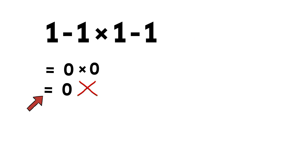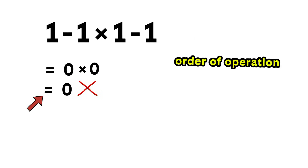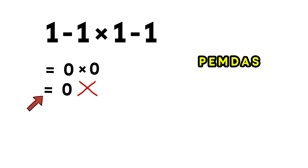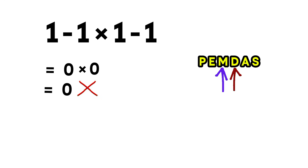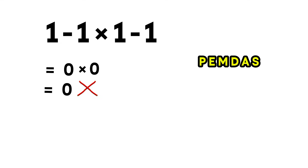Here's the reason why. In mathematics, we always follow the order of operations, also known as PEMDAS. That means we do parentheses first, then exponents, then multiplication or division, and finally addition or subtraction. Remember, multiplication and division have equal priority and we always work from left to right. The same rule applies to addition and subtraction.